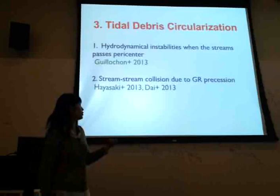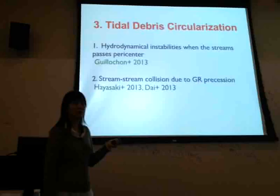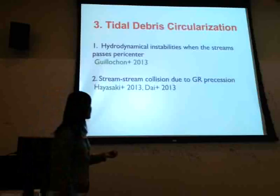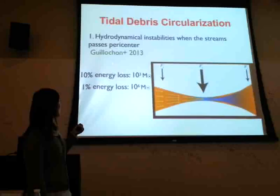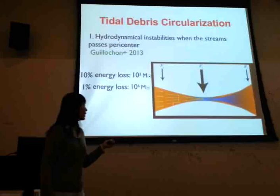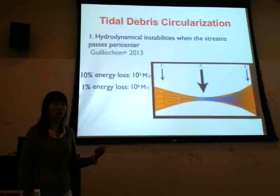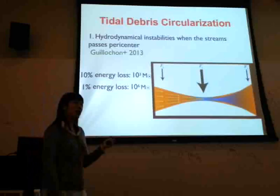GR precession of the debris trajectories links to tidal debris circularization. There have been two main mechanisms suggested for circularization: first, hydrodynamic instabilities when the stream passes pericenter; and second, stream-stream collision, which is purely a GR effect. For the first mechanism, simulated by James Wilson, as the debris stream leaves pericenter it expands transversely, and as it returns it is compressed very thin, allowing shocks and instabilities leading to loss of orbital energy.